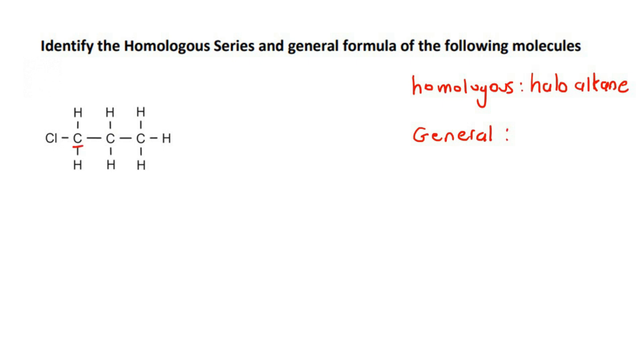So let's see, there are three carbons, so we can try to work this out together. There are three carbons, and then there's one, two, three, four, five, six, seven. So there's double the hydrogens plus one. And then there's a Cl.